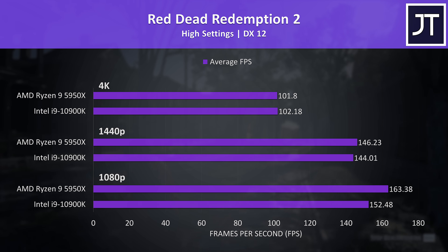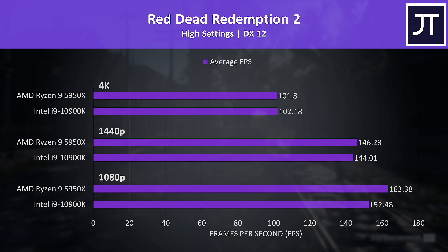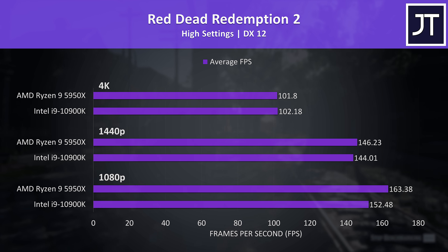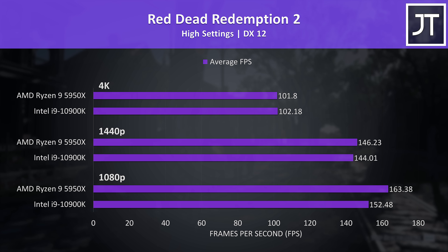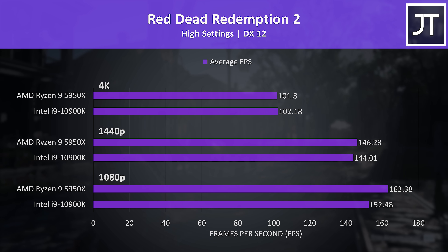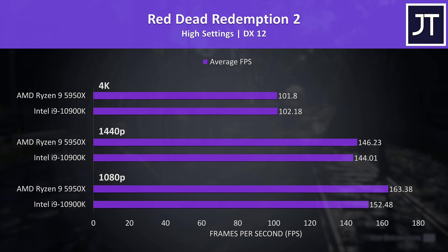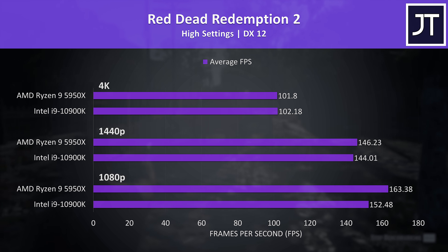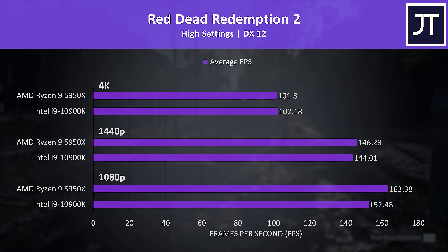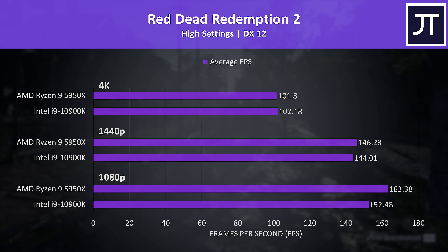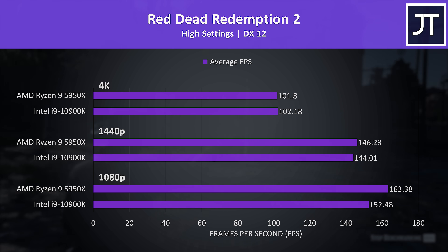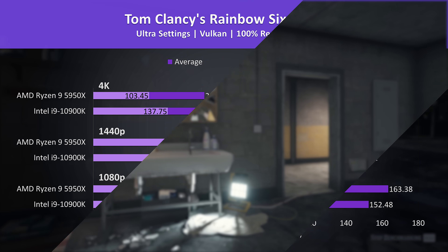Red Dead Redemption 2 was tested with the game's benchmark, and unlike CS:GO we're back to seeing no major changes at the higher resolutions. The 5950X was reaching 7% higher average FPS at 1080p, but only 1.5% ahead at 1440p.